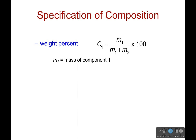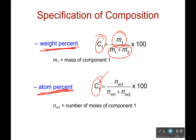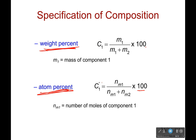Now, there are two ways we can quantify the amount of B in A: weight percent and atomic percent. Weight percent is simply the mass of one component over the total mass, times 100. Atomic percent is the number of atoms or molecules of one component over the total number of atoms or molecules, times 100. These two are connected — you can work that out through how density relates to the number of atoms.